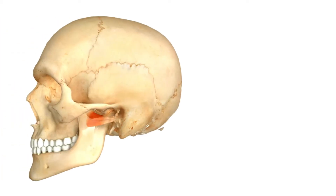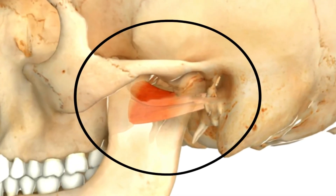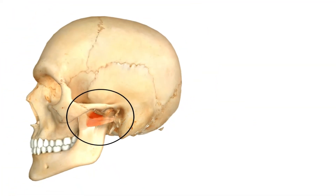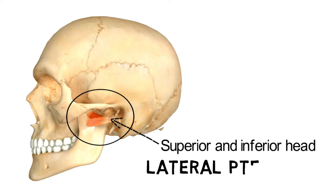Let's have a look at this muscle. So these two bands which you can see are the superior and inferior head of the muscle, and as a whole this muscle is the lateral pterygoid muscle.